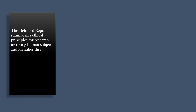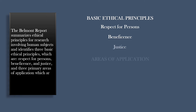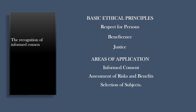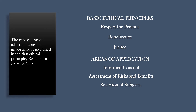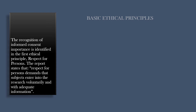The Belmont Report summarizes ethical principles for research involving human subjects and identifies three basic ethical principles: respect for persons, beneficence, and justice. It also identifies three primary areas of application: informed consent, assessment of risks and benefits, and selection of subjects. The recognition of informed consent's importance is identified in the first ethical principle, respect for persons. The report states that respect for persons demands that subjects enter into the research voluntarily and with adequate information.